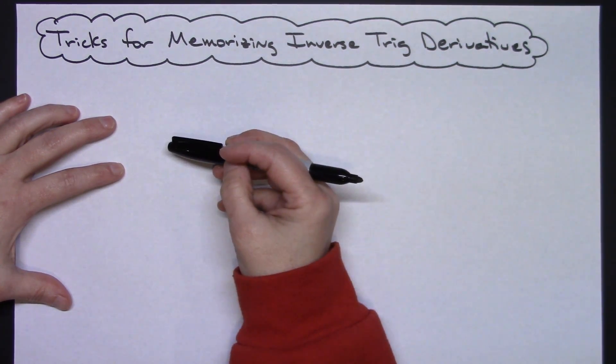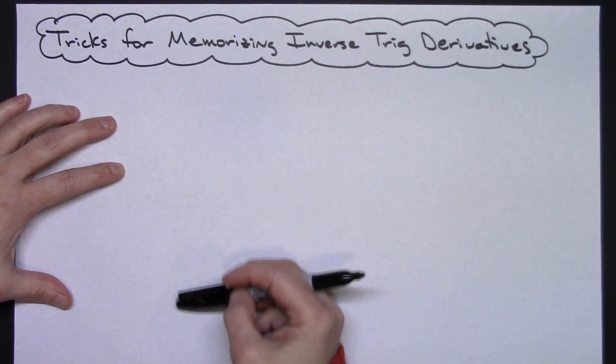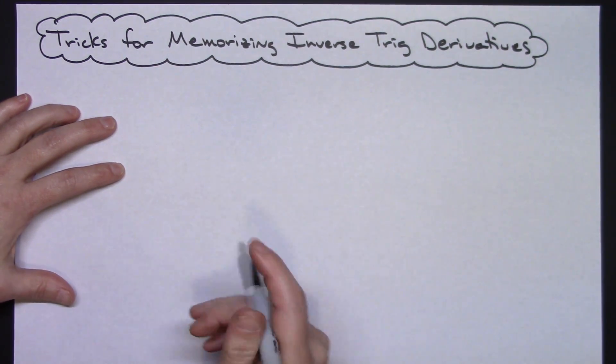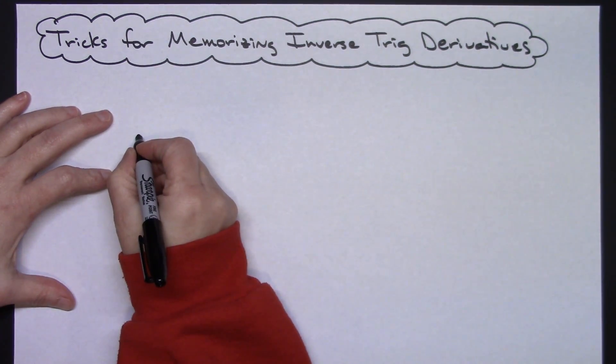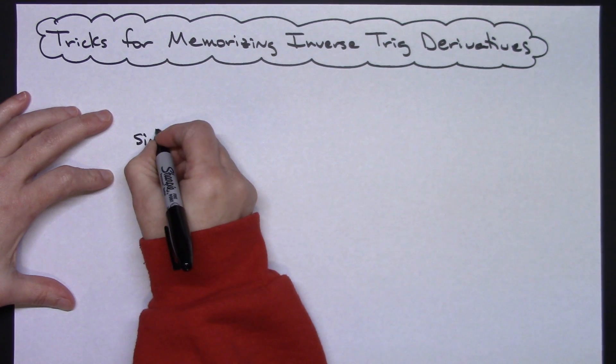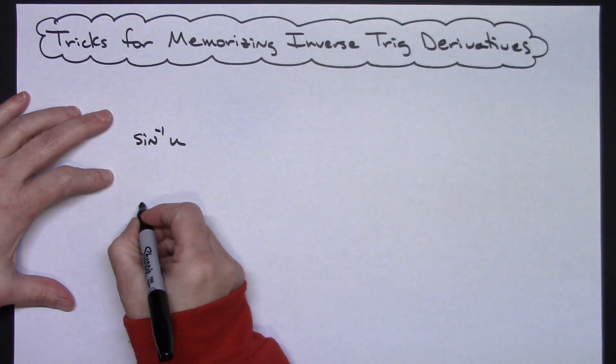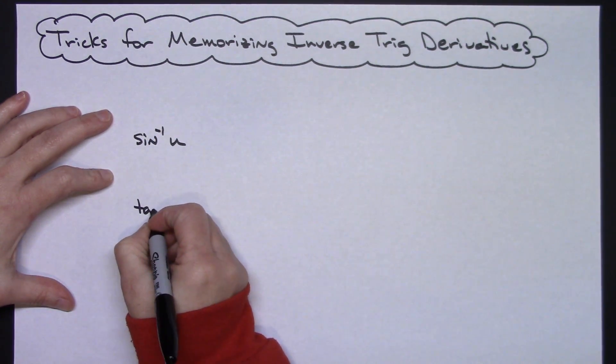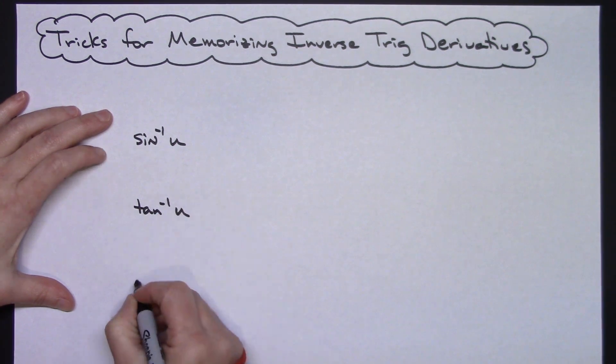So when I would go to jot these down and try to do it very quickly, I would do down my left-hand column: sine, tangent, and secant - STS, nice little pattern there. I would do inverse of sine U, then I would do inverse tangent U, and then I would do inverse secant U.